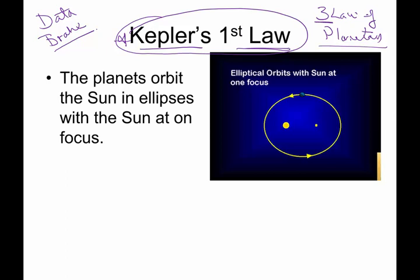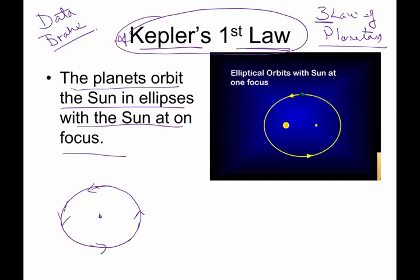Kepler's first law says the planets orbit the sun in ellipses with the sun at one focus. Aristotle and his bunch believed that the orbits were all perfect circles, and that belief permeated for about 2,000 years. When Kepler actually started looking at the numbers, he found that was not true. These orbits were not perfect circles. They were actually ellipses, which are more elongated or squashed circles.